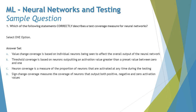Option B says: threshold coverage is based on neurons outputting an activation value greater than a preset value between zero and one. This looks promising — we're looking for something on the positive side. Threshold coverage measures the proportion of neurons activated during testing with a value greater than a preset threshold between zero and one. That certainly makes total sense, but let's check options C and D to be sure.